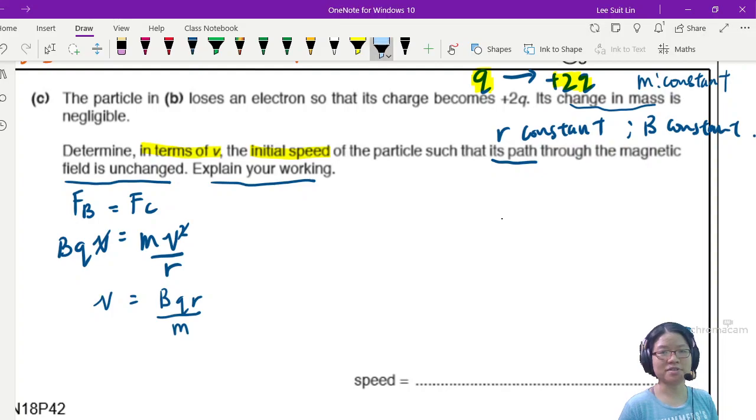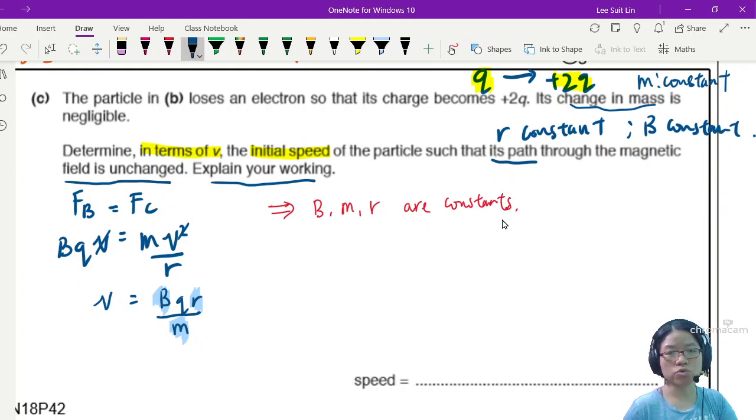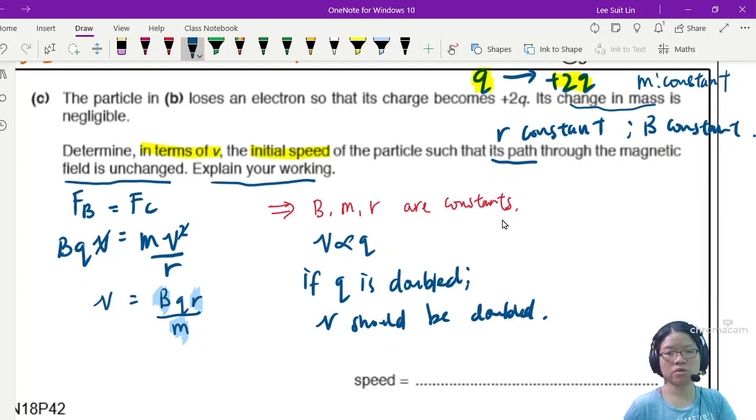Since B, m, and r are constants, v is proportional to q. Hence, if q is doubled from positive q to positive 2q, v should be doubled. So the new speed is 2v. This one no need to write 2 as significant figures. It's not a calculated value, it's a term.